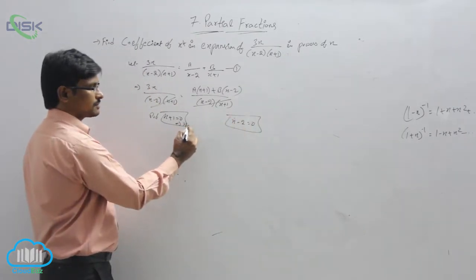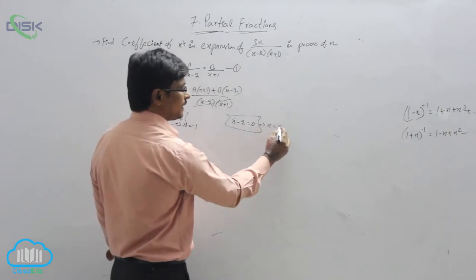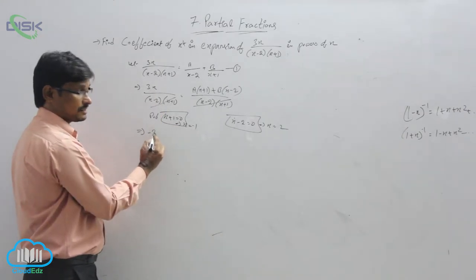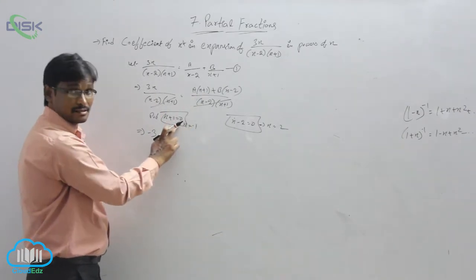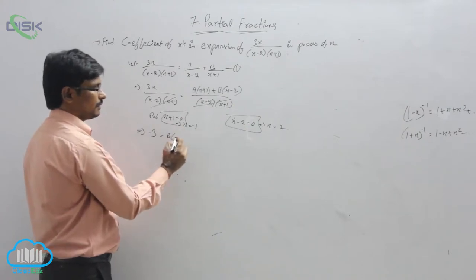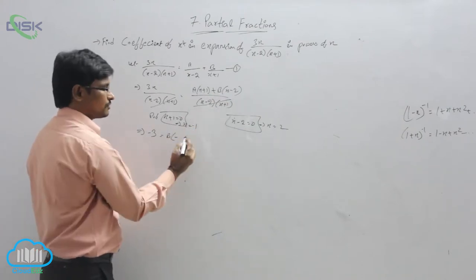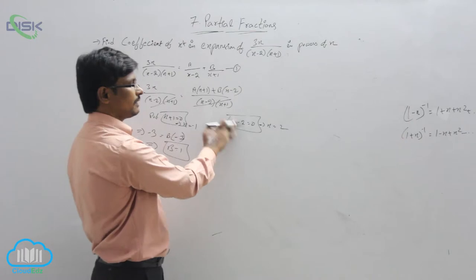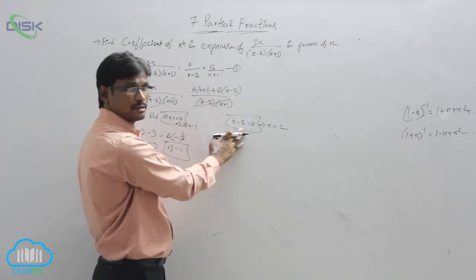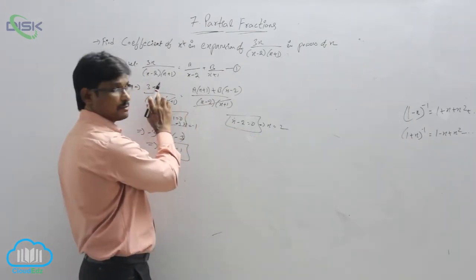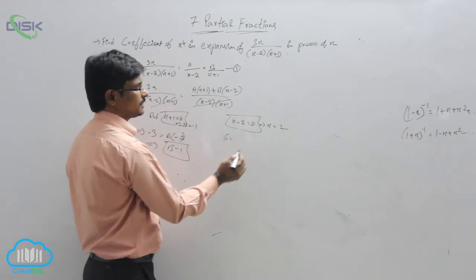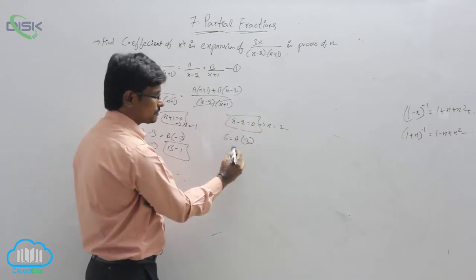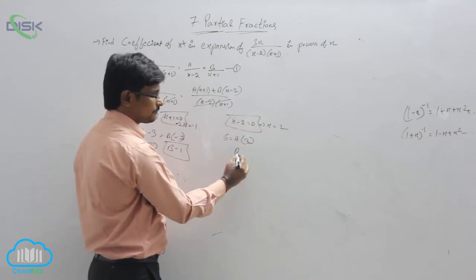From x plus 1 equal to 0, x equals minus 1. From x minus 2 equal to 0, x equals 2. Substituting x equal to minus 1: we get minus 3 equal to B times (minus 1 minus 2), which is minus 3, so B equals 1. Substituting x equal to 2: we get 3 times 2 equals 6, equal to A times (2 plus 1) equals 3A, so A equals 2.